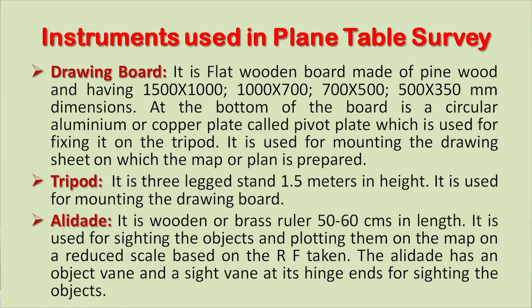What are the instruments used in plane table survey? The main instruments include the drawing board — a flat wooden board made of pine wood having dimensions of 1500×1000, or 1000×700, or 700×500, or 500×350 millimeters. At the bottom of the board is a circular aluminium or copper plate called the pivot plate, which is used for fixing it on the tripod. It is used for mounting the drawing sheet on which the map or plan is prepared.